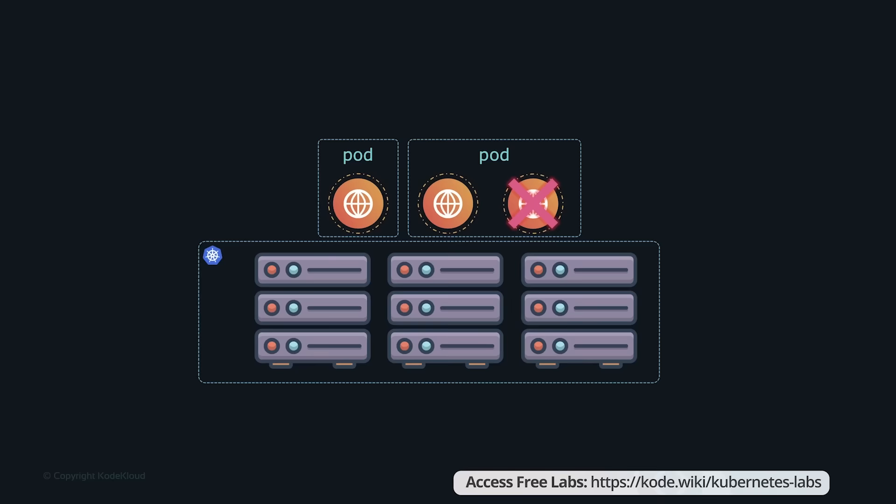When you want to scale up, you don't add more containers to the pod — you create more pods. Typically, an application instance running as a container has a one-to-one relationship with a pod. To create more instances of an application, you create more pods. However, the one-to-one relationship is not a strict rule. It is common practice to have a helper container or sidecar container along with the main application — for example, an agent that collects logs or monitors the application and reports to a third party.